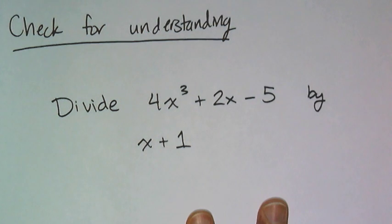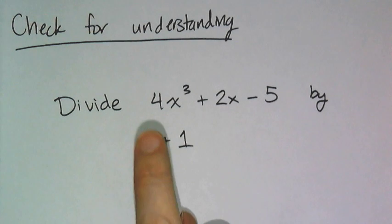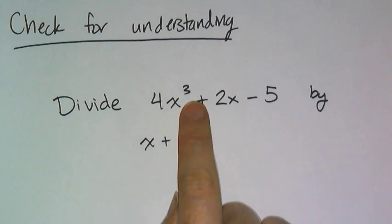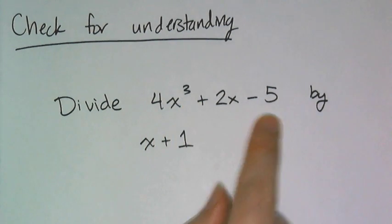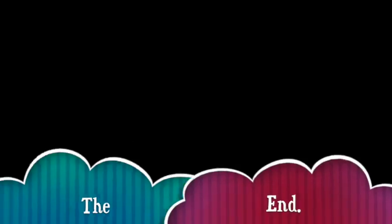Now finally, your last check for understanding in Algebra 1: divide 4x³ + 2x − 5 by x + 1.